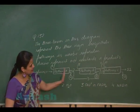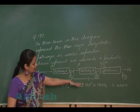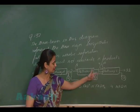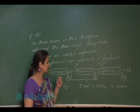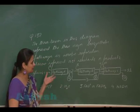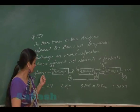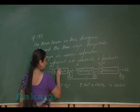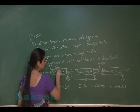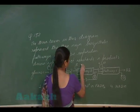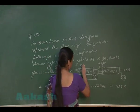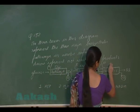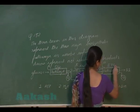In this aerobic respiratory pathway, we have to identify what positions 4, 8, and 12 represent with respect to the net reactants or products. Pathway A is glycolysis, pathway B represents the Krebs cycle, and this is the electron transport system.